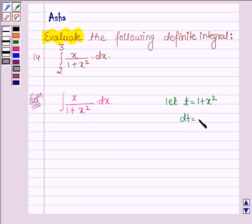So, this implies dt = 2x dx, or x dx = dt/2. So, this integral can further be written as dt/2t.